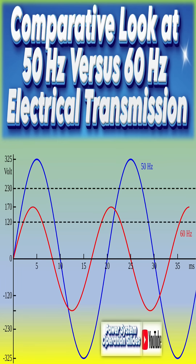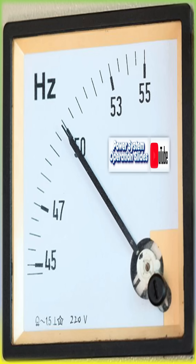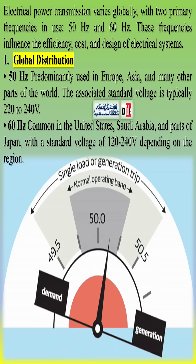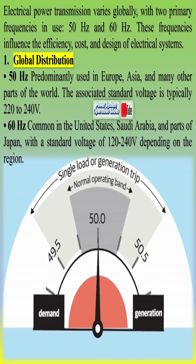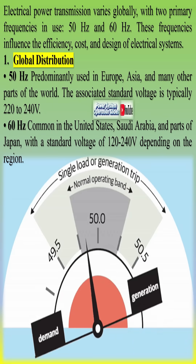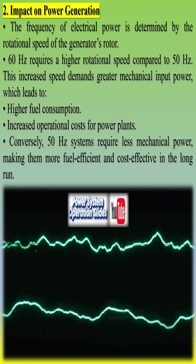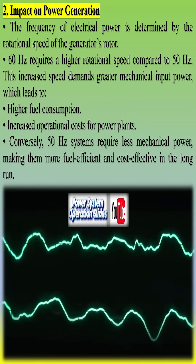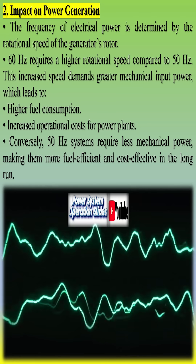Electrical power transmission varies globally, with two primary frequencies in use: 50 Hz and 60 Hz. These frequencies influence the efficiency, cost, and design of electrical systems. 50 Hz is predominantly used in Europe, Asia, and many other parts of the world, with an associated standard voltage of typically 220–240 V. 60 Hz is common in the United States, Saudi Arabia, and parts of Japan, with a standard voltage of 120–240 V depending on the region.